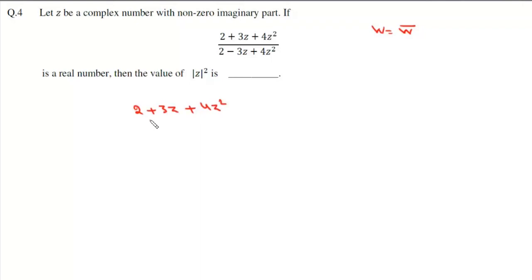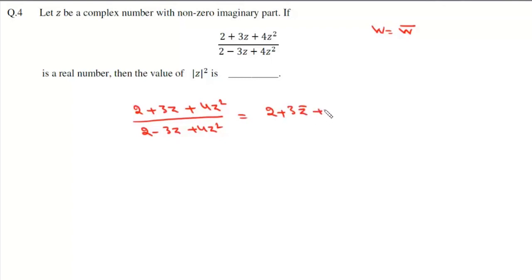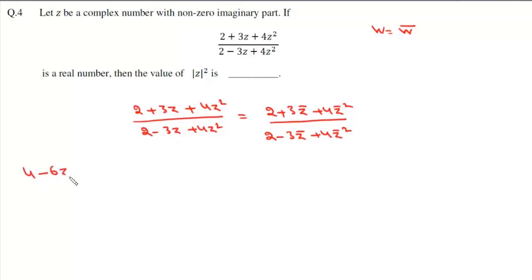One way of doing it: we write this as (2 + 3z + 4z²) / (2 - 3z + 4z²) and set it equal to its conjugate, which is (2 + 3z̄ + 4z̄²) / (2 - 3z̄ + 4z̄²). Cross-multiplying, we get 4 - 6z̄ + 8z̄²...